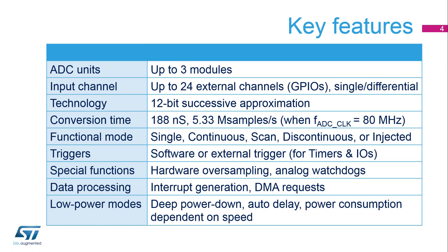There are also several different triggering methods. In order to offload the CPU, the ADC has three analog watchdogs for monitoring thresholds. The ADC also offers oversampling to extend the number of bits presented in the final conversion value. For power-sensitive applications, the ADC offers a number of low-power features.